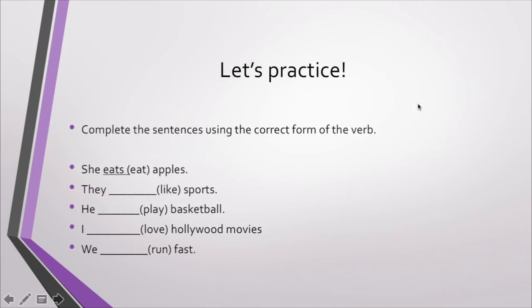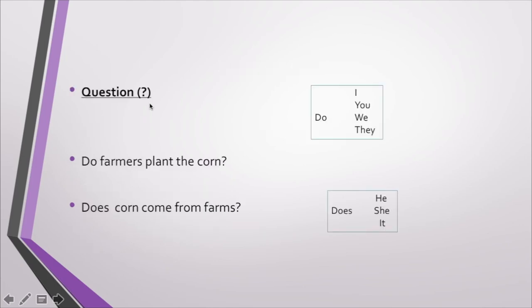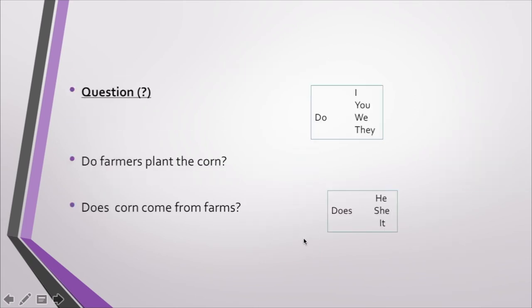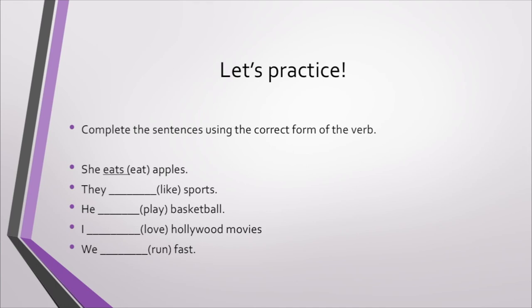Let's practice. Pongamos esto en práctica. Dice complete the sentences using the correct form of the verb. Vamos a completar las oraciones usando la forma correcta del verbo. Here we have an example: she eats apples. Transformé el verbo y le agregué una S. ¿Recuerdan por qué? Let's see. Because of the rule, affirmative sentences with he, she or it, you have to add an S. La regla de la afirmación cuando el sujeto es he, she or it se le agrega la S.